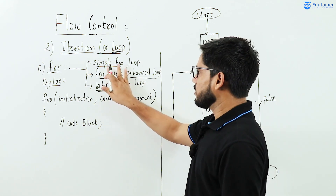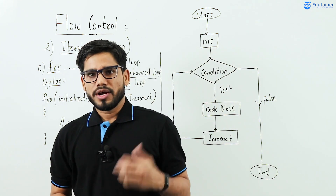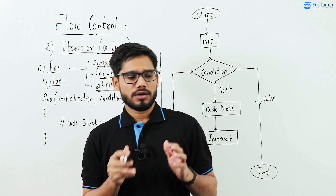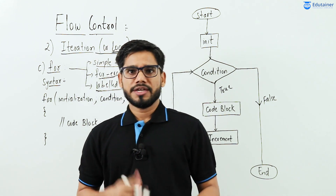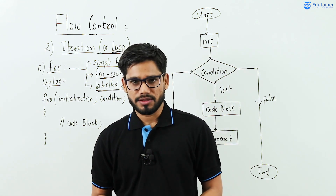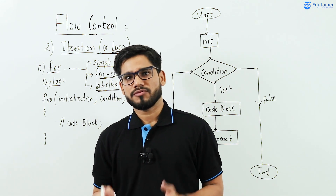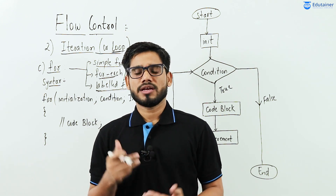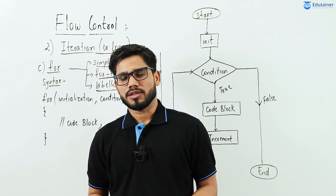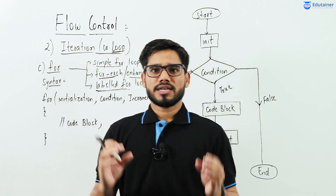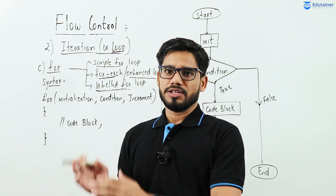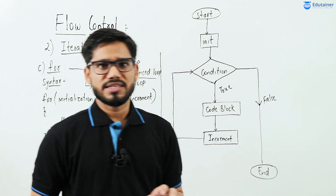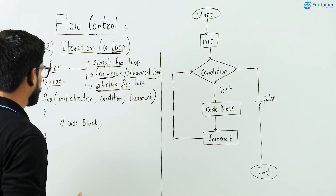But right now we are only concerned about simple for loop. Coming to the iteration part — we have studied while loop and do-while loop so far, now we will study for loop. For loop provides iteration, means repetition, in a concise manner, whereas in while and do-while loop only the condition part is there, and increment or decrement has to be done separately.